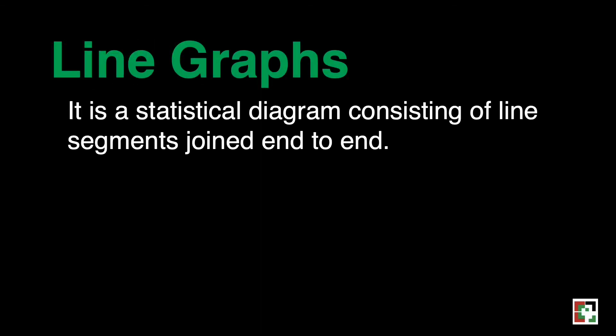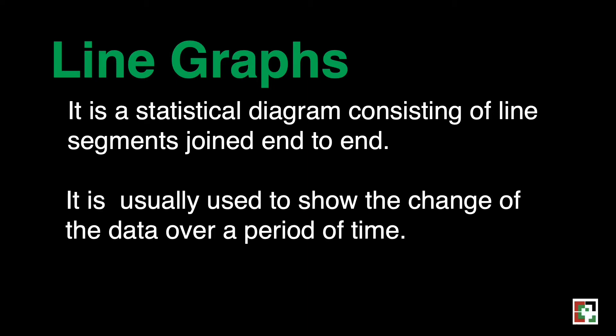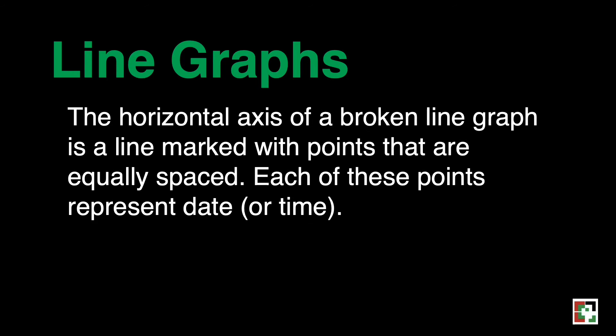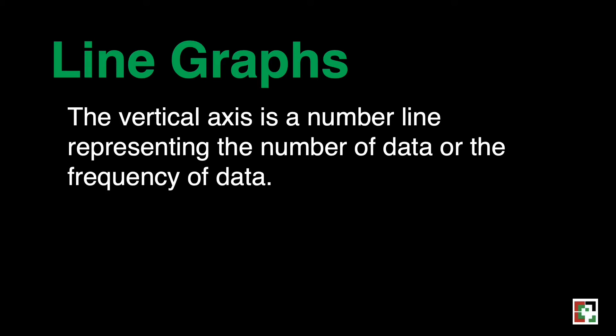What are line graphs? It is a statistical diagram consisting of line segments joined end-to-end. It is usually used to show the change of data over a period of time. The horizontal axis of a broken line graph is a line marked with points that are equally spaced, and each of these points represents a date or time. The vertical axis is a number line representing the number of data or the frequency of data.